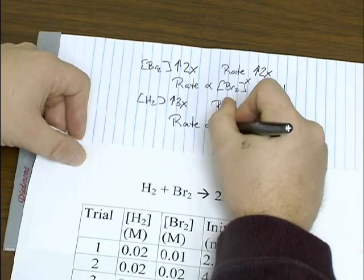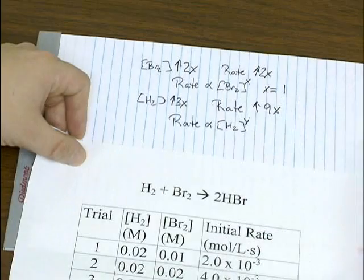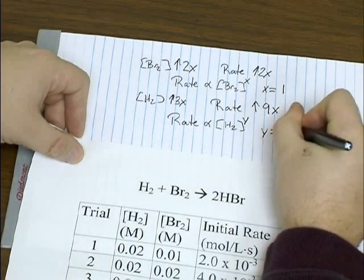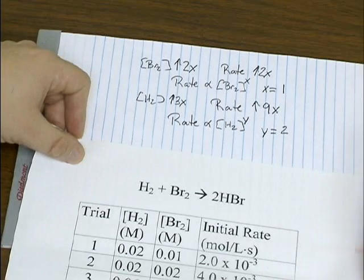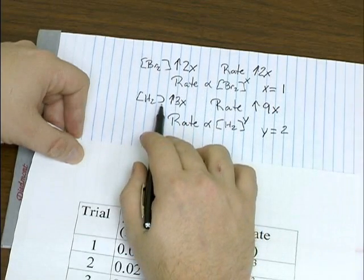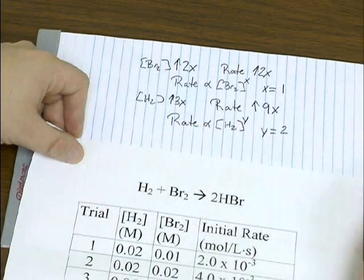So the rate again is going to be proportional to hydrogen's concentration raised to some exponent. We'll call it Y. Here it looks like Y is equal to two, or it's the square or second order with respect to hydrogen. Because whatever factor you increase hydrogen's concentration, the effect is the rate changes by the square of that value.